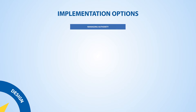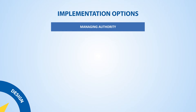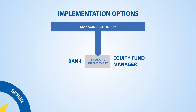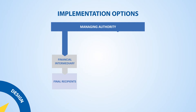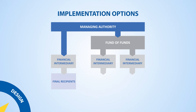For instance, you may entrust the implementation of the financial instrument to financial intermediaries, such as a bank or an equity fund manager. These financial intermediaries can be useful to help managing authorities deliver support to final recipients. You may also decide to set up a fund of funds as an umbrella instrument that uses several specific funds — for instance, a fund of funds for small and medium-sized enterprises with specific funds for loans, guarantees, and equity investments.